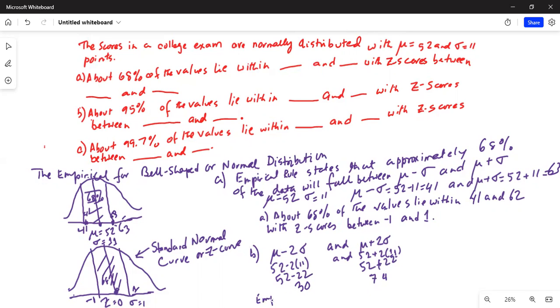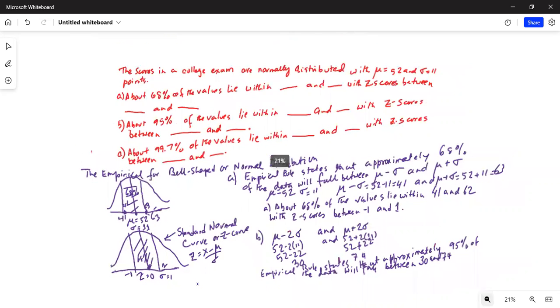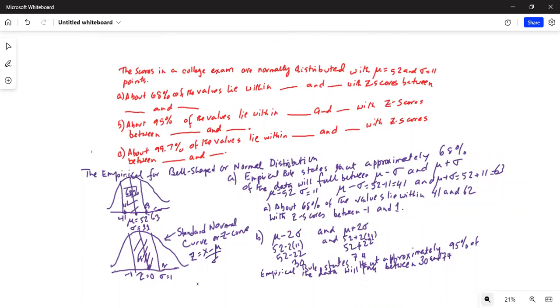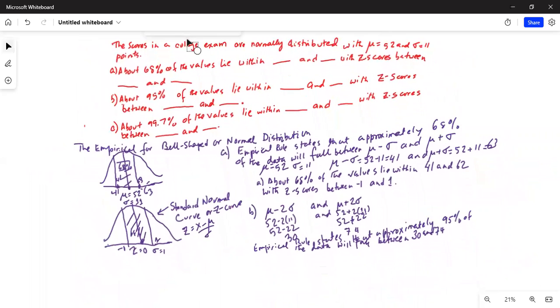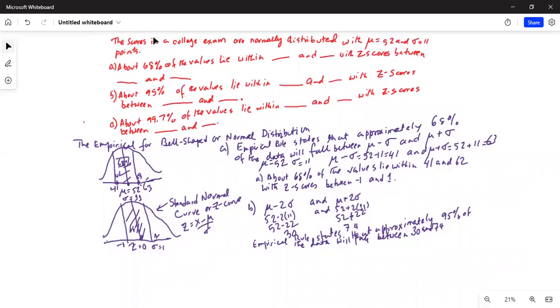So empirical rule states that approximately 95% of the data will fall between 30 and 74. I just want to mention that the standard normal variable z is given by x minus mu by sigma, right? So let's create some space for ourselves.